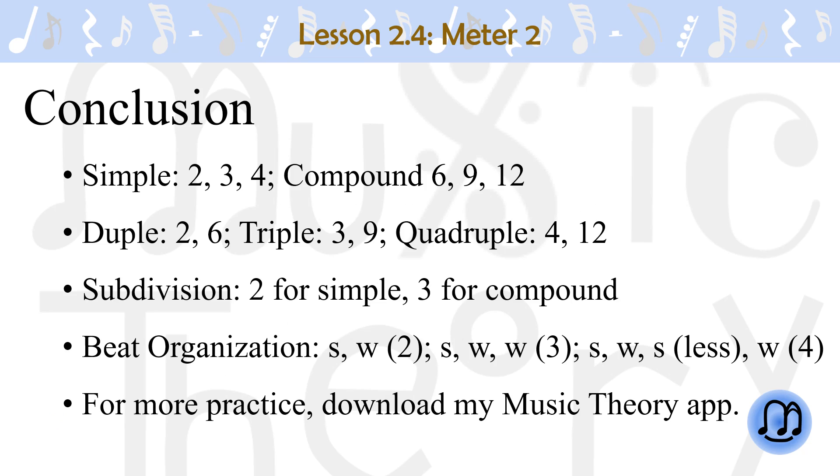Simple meters have top numbers 2, 3, and 4, and compound meters have top numbers 6, 9, or 12. Duple meters have top numbers 2 and 6, triple has 3 and 9, and quadruple has 4 and 12.